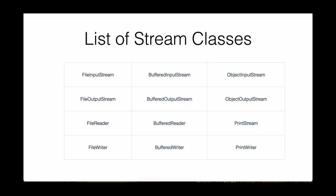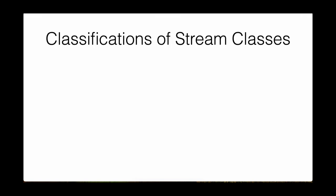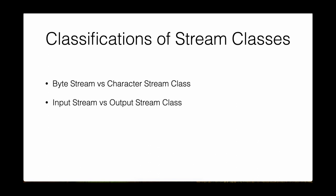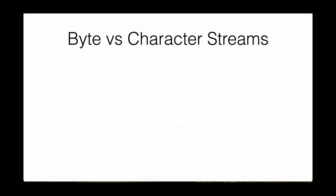To understand the naming conventions, let's look at the different classifications of stream classes. A stream class can be a byte stream or a character stream. It can also be an input stream or an output stream. Additionally, a stream class can be a low-level stream or a high-level stream. Let's start with byte versus character streams.